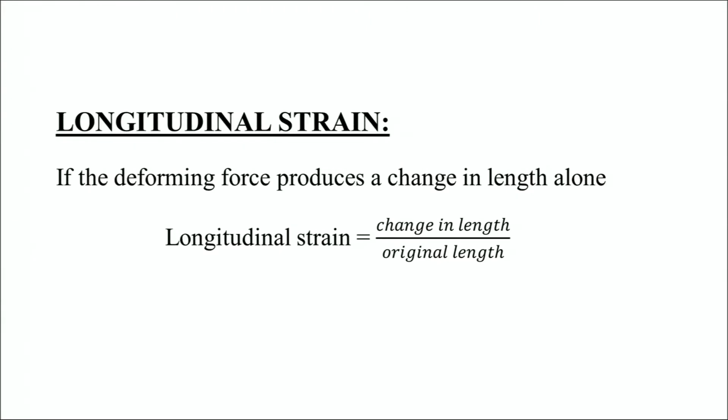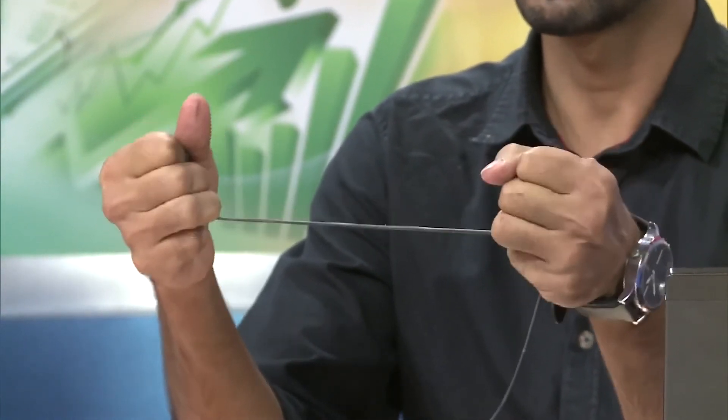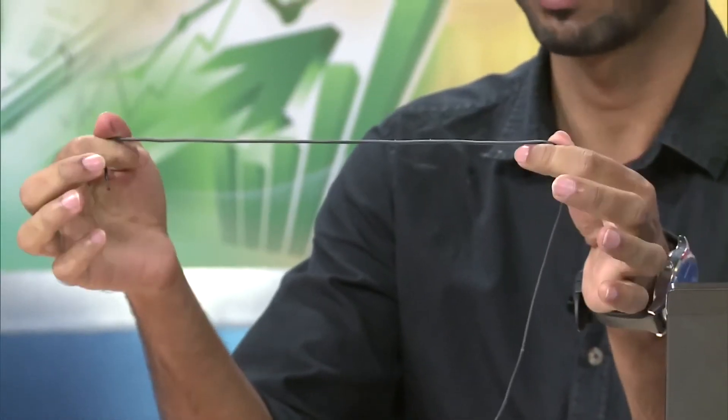Now we will discuss the types of strain. The very first type is longitudinal strain. Longitudinal strain deals with only one-dimensional solid objects. It states that if the deforming force produces a change in the length alone — meaning the breadth should be negligible. When we think of something having a length and negligible breadth, we come across the idea of a thin wire. If we stretch this thin wire outwards, it will change in terms of its stretched length. Therefore, longitudinal strain is the ratio of actual stretch to the original length of the wire.